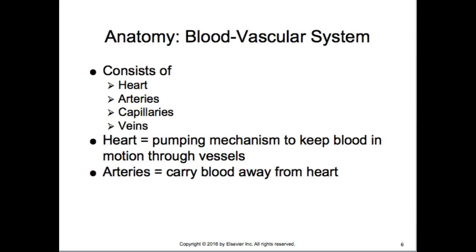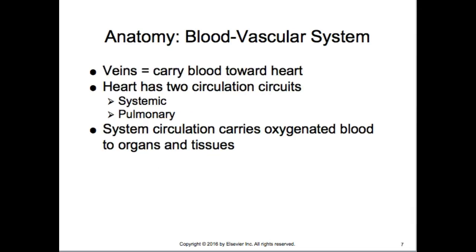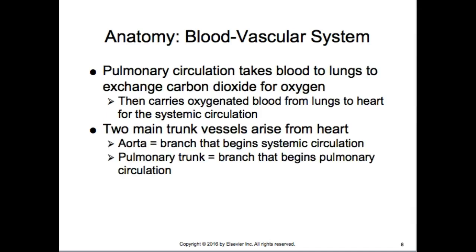The blood vascular system consists of the heart, arteries, capillaries, and veins. The heart pumps blood throughout the body; arteries carry oxygenated blood away from the heart; veins carry deoxygenated blood back to the heart. The heart has two circulation circuits — systemic and pulmonary. Systemic circulation carries oxygenated blood to the organs and tissues; pulmonary circulation takes blood to the lungs to exchange carbon dioxide for oxygen.